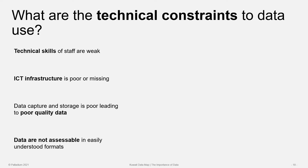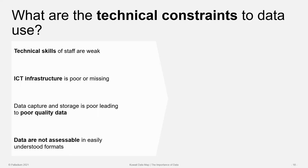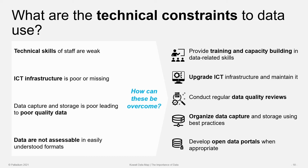Technical constraints are many, and can include weak technical skills of staff to store, use, and analyze data; inadequate information technology — computer and server technology — for storing and accessing information; poor data quality resulting from poor data collection practices; and data that may not be accessible in easily understood formats. These again can be overcome through training and capacity building in data-related skills, upgrading and maintaining information and communication technology infrastructures, conducting regular data quality reviews, organizing data capture and storage using best practices, and developing open data portals when appropriate.